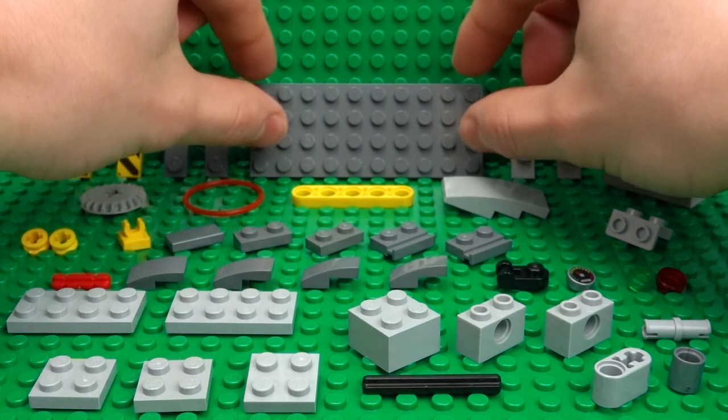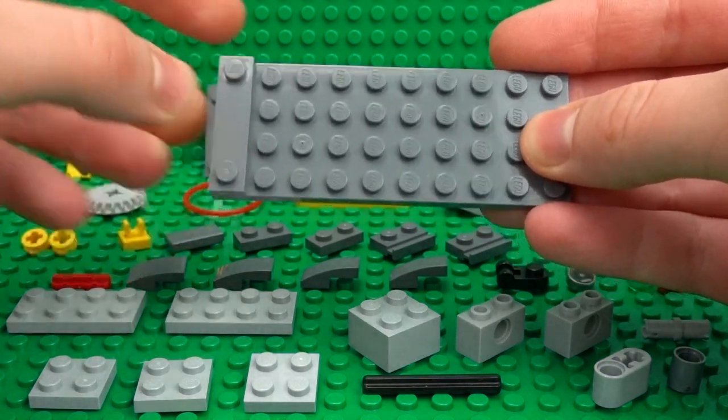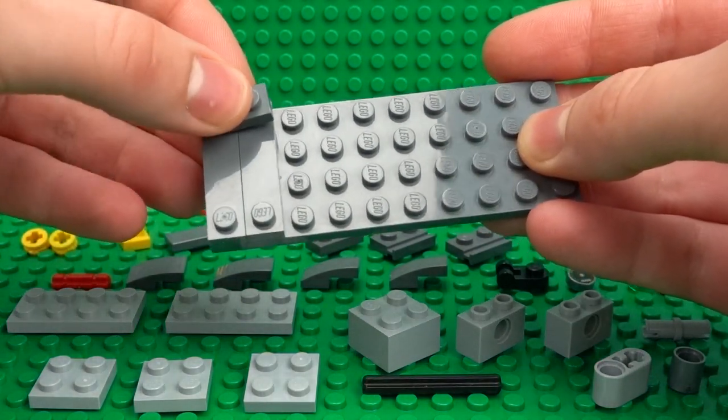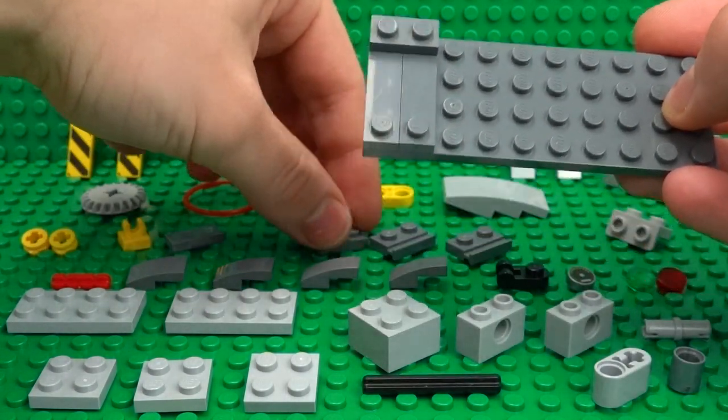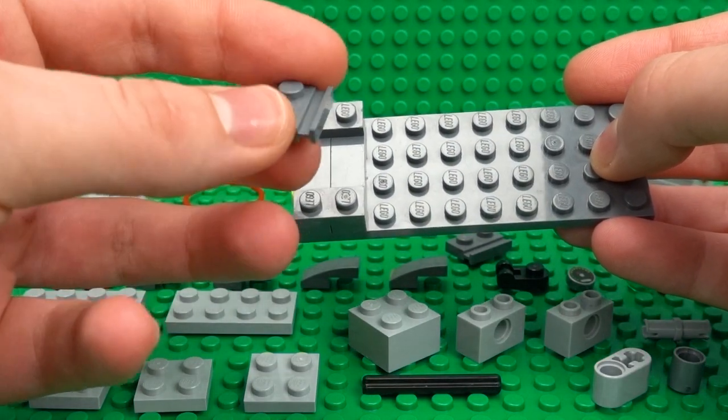This will use our 4x10 plate as well as two 1x4 plates with the studs on either end. Then build that up with two 1x2 plates, just the regular ones for now, as well as two 1x2 slotted plates facing outwards on this side.